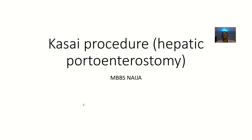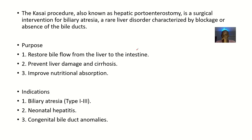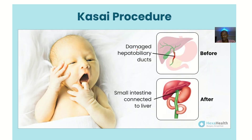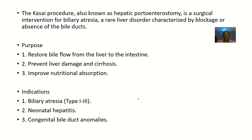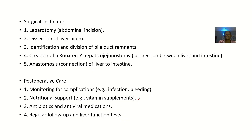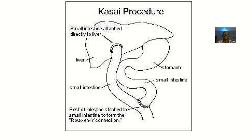Moving on, we'll be talking about the COSI procedure, also known as hepatic portoenterostomy. It's a surgical procedure done to reconstruct the bile duct — after bile duct strictures, also known as bile duct atresia. Most of the time it uses a small intestine. We'll get to talk about the COSI procedure, the goals, the indications, the surgical techniques, the post-operative care, and everything else involved.